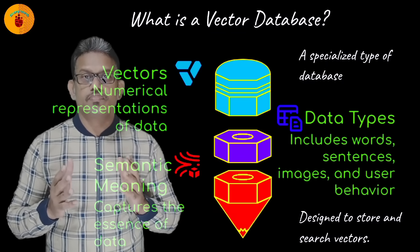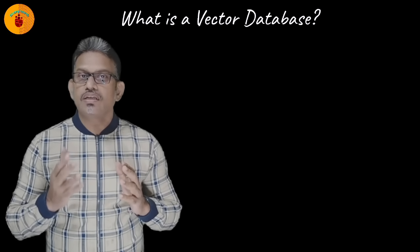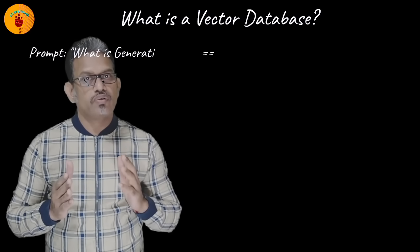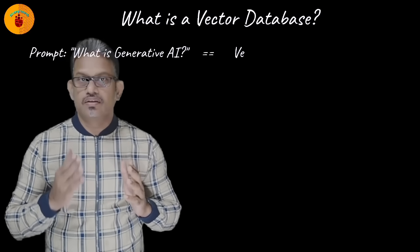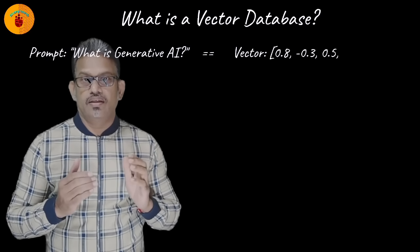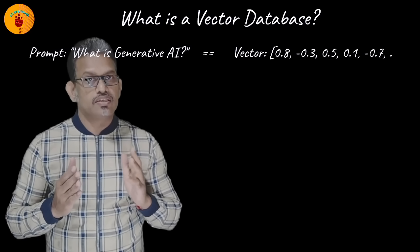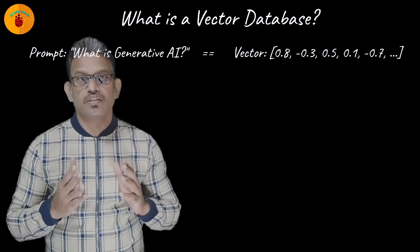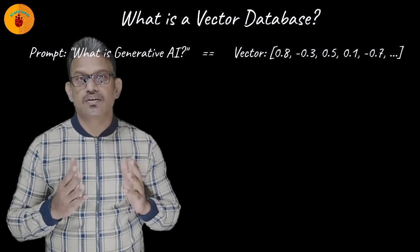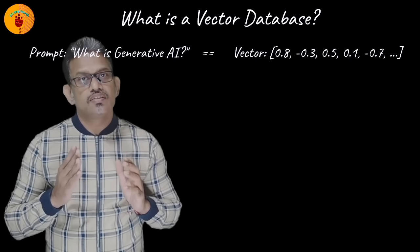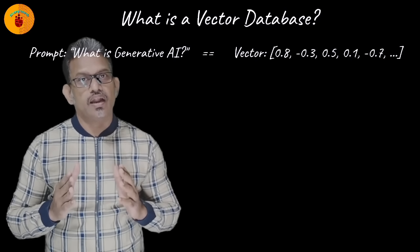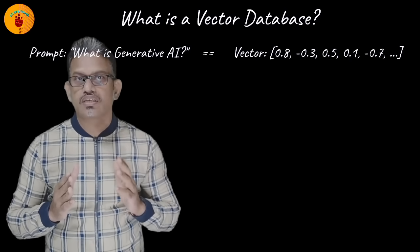For example, this sentence about generative AI might be converted into a vector — a numerical array, a list of 384 or 1536 numbers. This vector captures its semantic meaning, not just keywords.